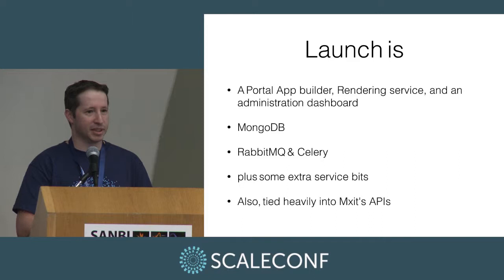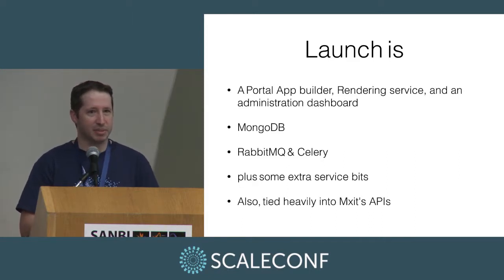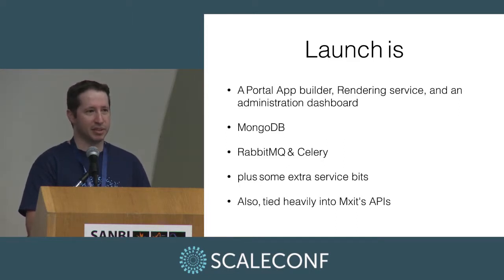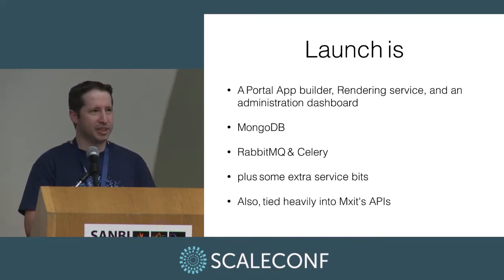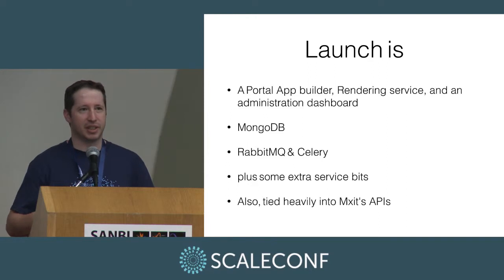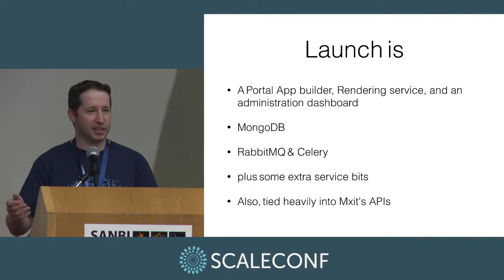Launch is backed by MongoDB as a data store. We have some queuing going on — we need to send out broadcast messaging — and we use RabbitMQ and Celery to take care of that. We have certain page types that need to be updated regularly, so we have Twitter pages, RSS pages, and we tie very heavily into the Mixit APIs. A user will log in to Launch, create a new application, and that creation is actually provisioning an application in Mixit. When the user changes the app's avatar, we're actually changing it in Mixit — there's a high degree of integration.